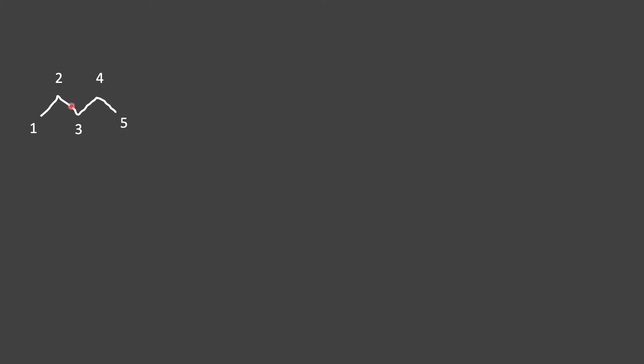Now I want us to do some practice. We're going to take what we learned from this video and the last video and try some problems. So we have a line structure here. Essentially, you want to start from the very beginning and count — carbon one, two, three, four, five. Each point in the line structure counts as a carbon. So we have five singly bonded carbons — no double bond added here. So this is called pentane.